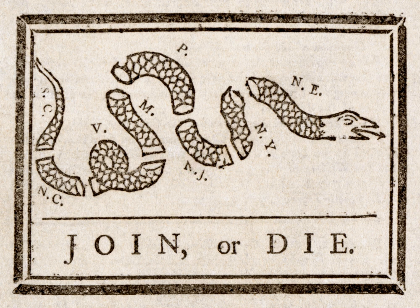New England colonies: Province of New Hampshire, established in the 1620s, chartered as Crown Colony in 1679. Province of Massachusetts Bay, established in the 1620s, a Crown Colony 1692. Colony of Rhode Island and Providence Plantations, established 1636, chartered as Crown Colony in 1663. Connecticut Colony, established 1636, chartered as Crown Colony in 1662.